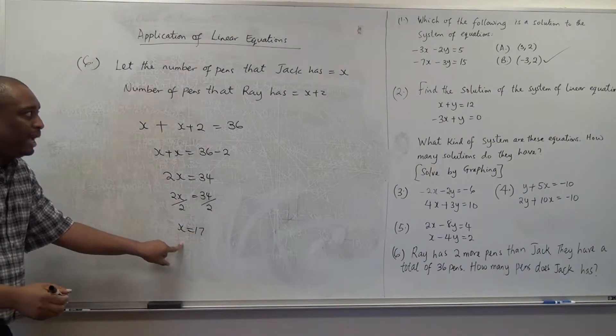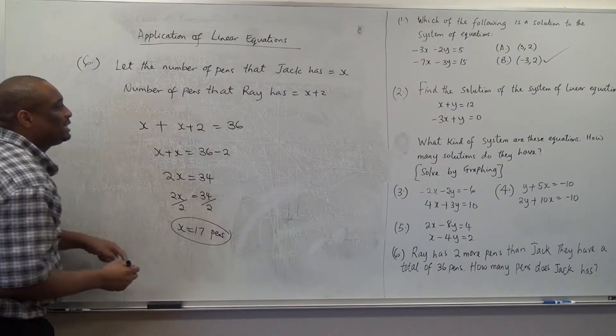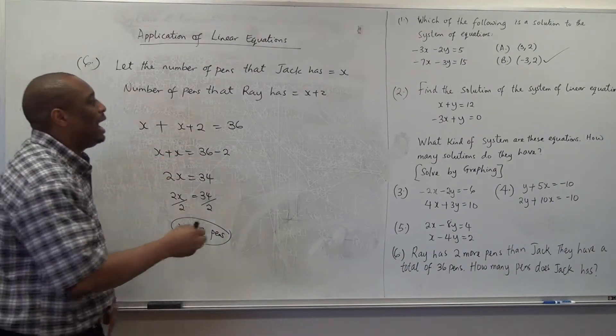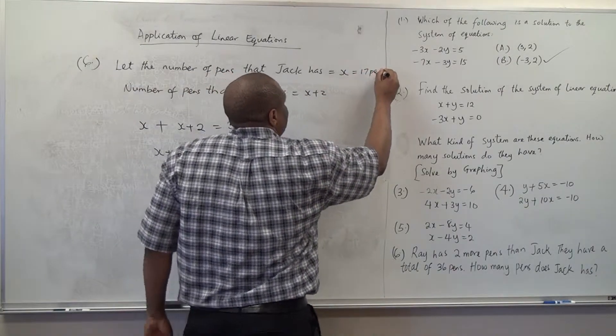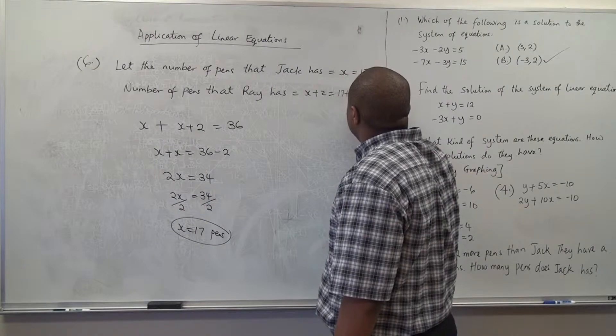So, Jack has seventeen pence, and Ray will have nineteen pence (seventeen plus two, which is nineteen pence).